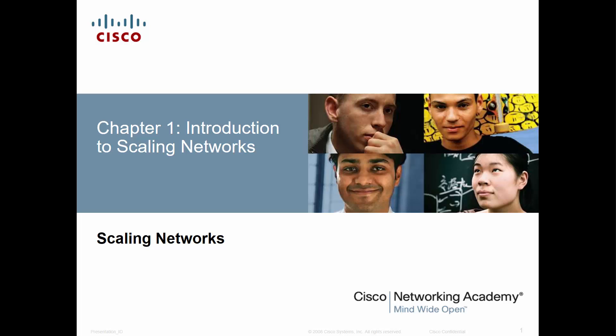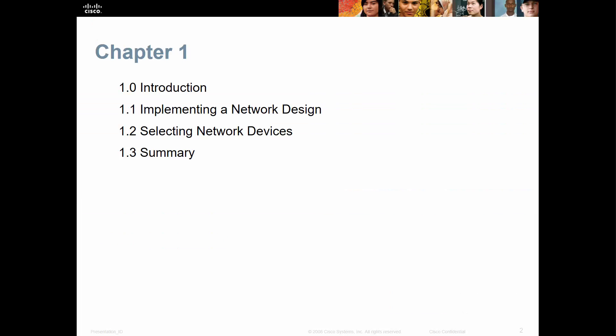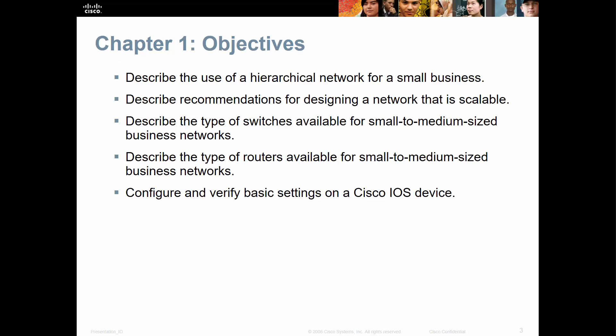Welcome to Cisco's Scaling Networks. This is the third installment of the CCNA material — chapter one, an intro back to scaling networks. In reality, it's more of a discussion on basic switching. We're going to do an implementation of a network design, selecting the appropriate network devices, reviewing the hierarchy model, looking at turning up switches and routers for small to medium businesses, and some basic settings on a Cisco IOS device.